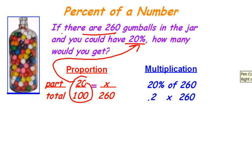Use your cross products here. 100x and 260 times 20, do the 2 times 26, 5200. Now don't be afraid of the large numbers. I'm going to show you a nice easy way to divide here in just one moment.